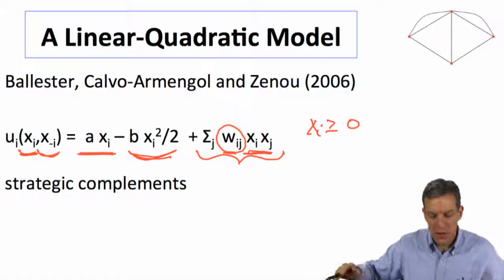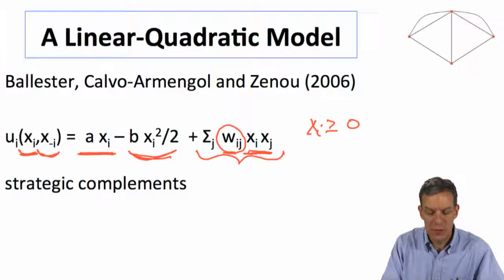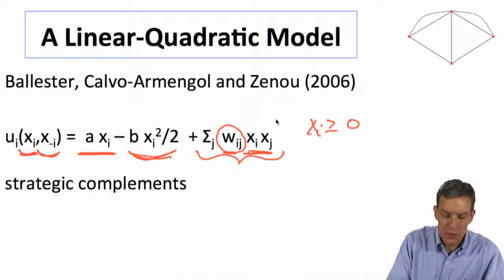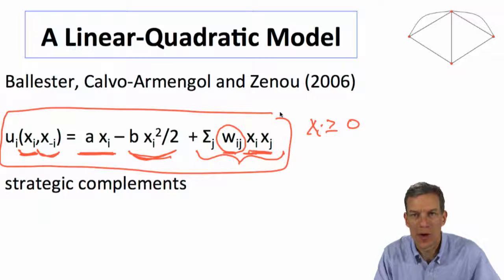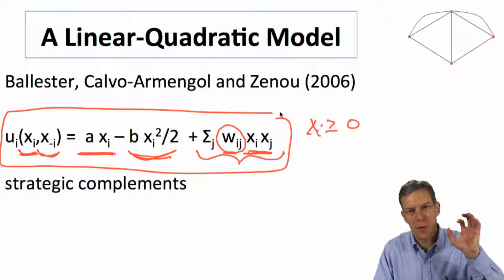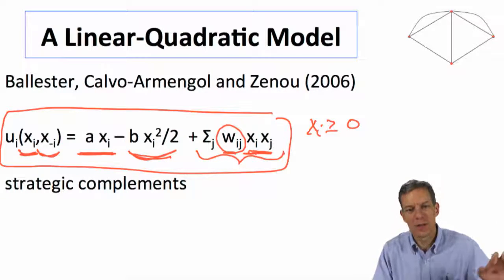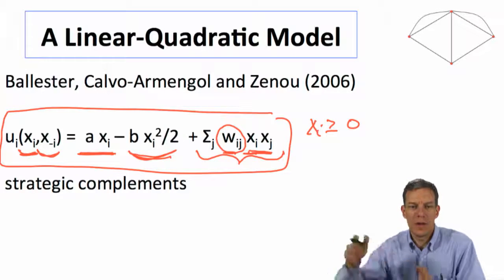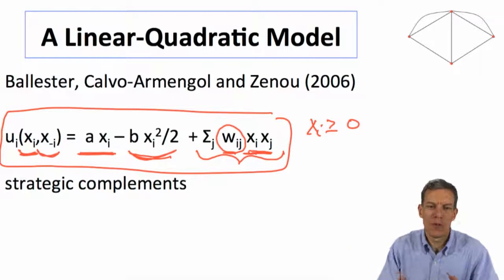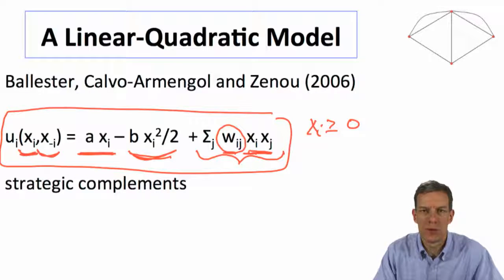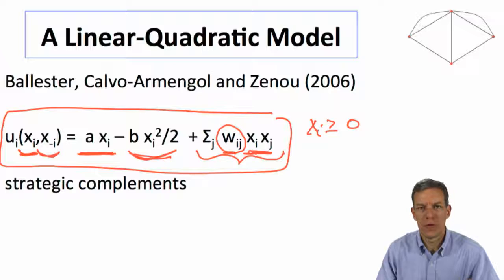So the full model that they have allows also for some global substitutes and so forth, but let's focus in on this essential aspect of the model, which is the linear quadratic aspect, which is that I get a positive payoff from my direct action, I get some negative cost, which is quadratic, and then a bonus in terms of what other individuals are doing and strategic complements.